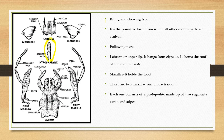This is a design for biting and chewing type, and this is a primitive form of mouthparts. In Latin, primitive form — on your structure, the normal structure. The labrum or upper lip hangs from the structure.